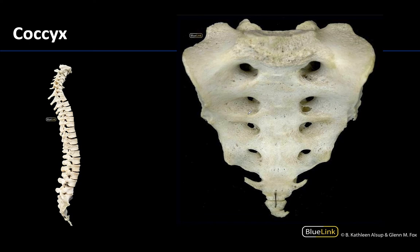The coccyx is also an immovable portion of the vertebral column and is not a weight-bearing structure. It is the inferior-most portion of the vertebral column, formed by the fusion of approximately four rudimentary coccygeal vertebrae — though that number can be variable. Coccygeal vertebra one may remain separate from the rest of the coccyx, as seen in this individual. The most inferior three coccygeal vertebrae typically fuse around middle age, and these are definitely the most rudimentary vertebrae in terms of size.